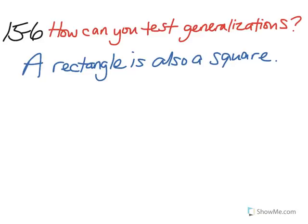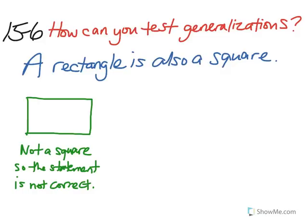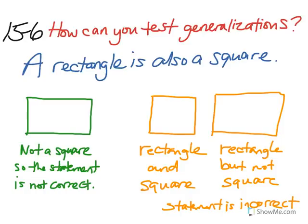Some of you may have done the following. You might have drawn a rectangle, and since a rectangle does not satisfy the properties of a square, you might determine that this statement is not correct because a rectangle is sometimes not a square. You may have also chosen to draw both a square and a rectangle. Since a square does satisfy the properties of a rectangle, a square is also a rectangle.